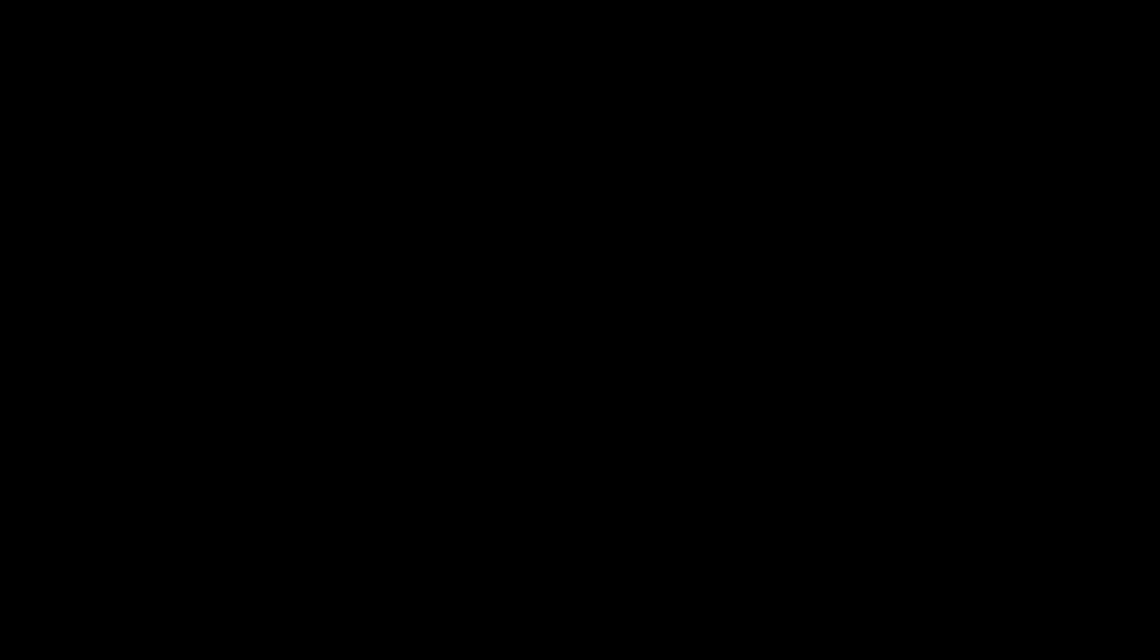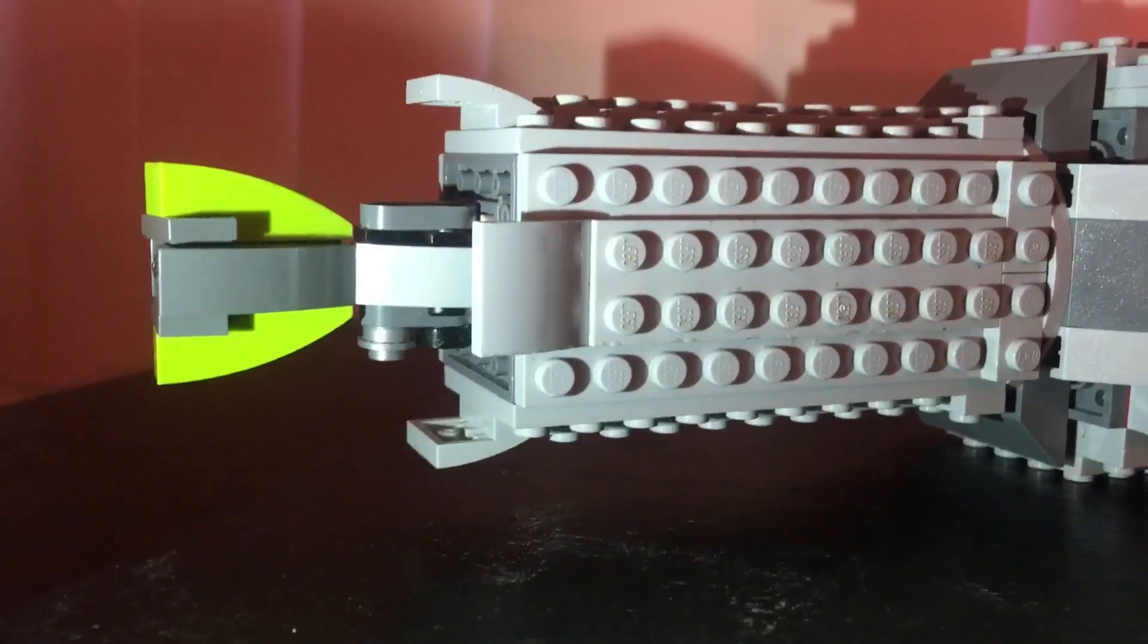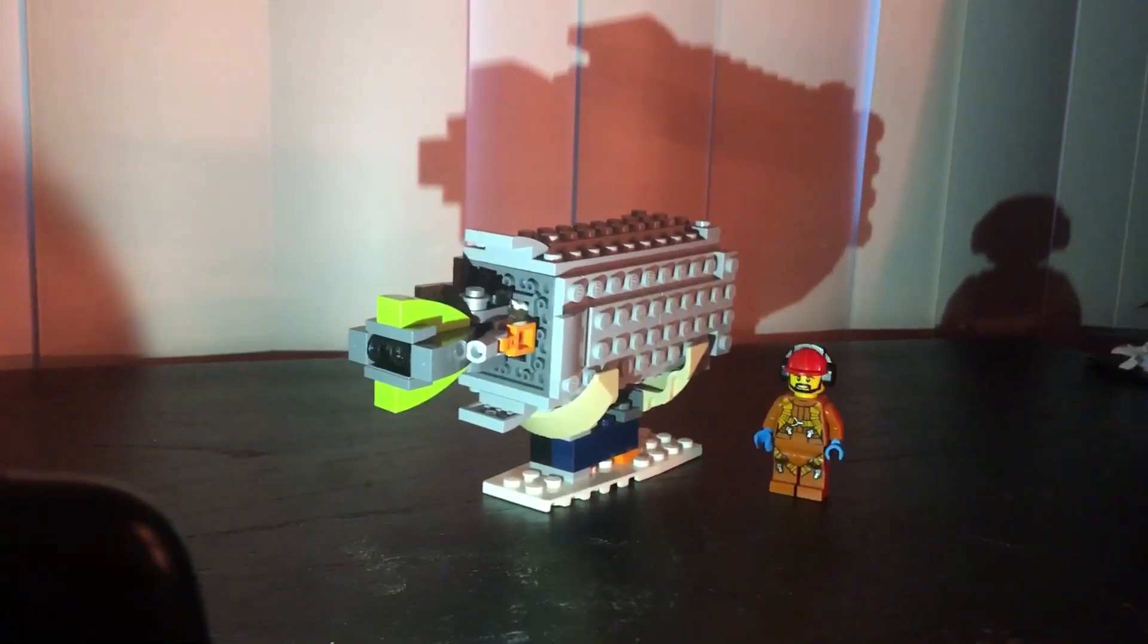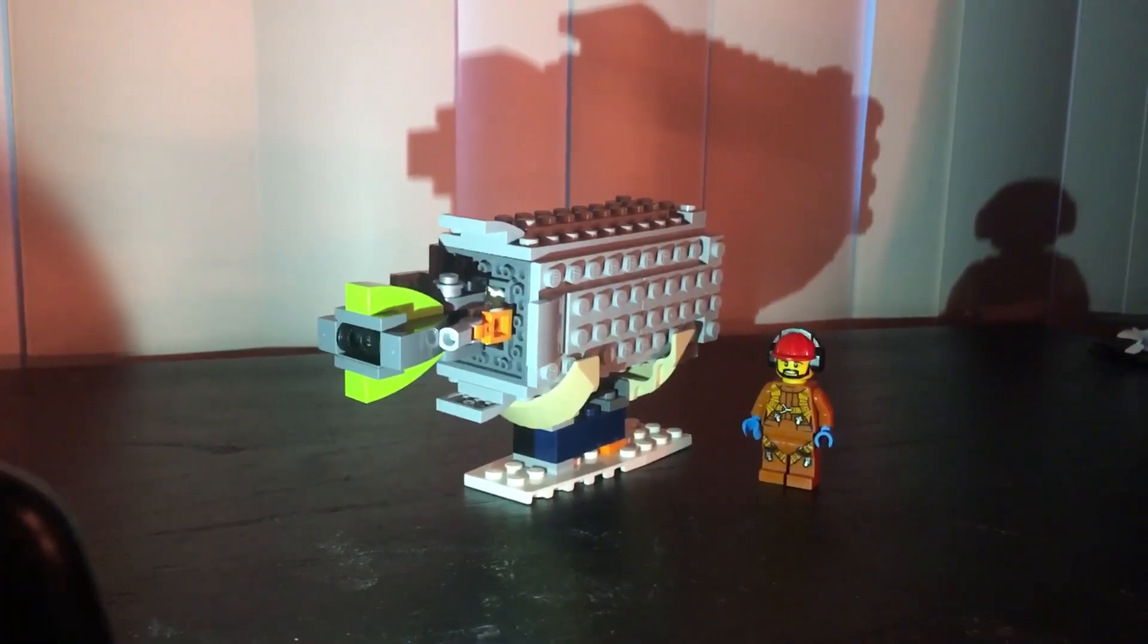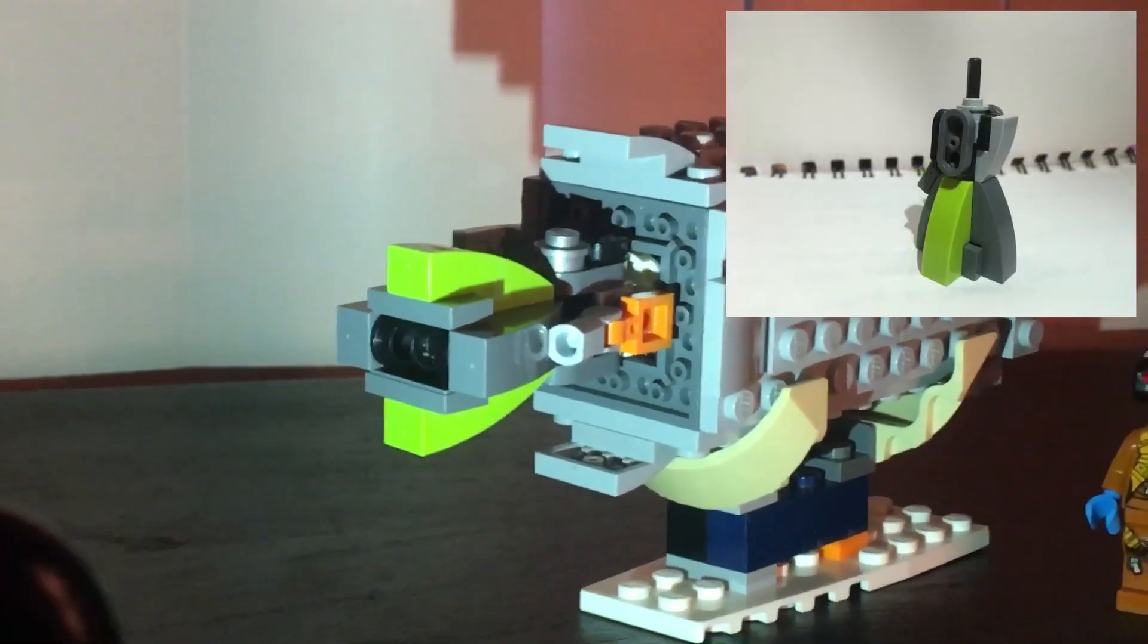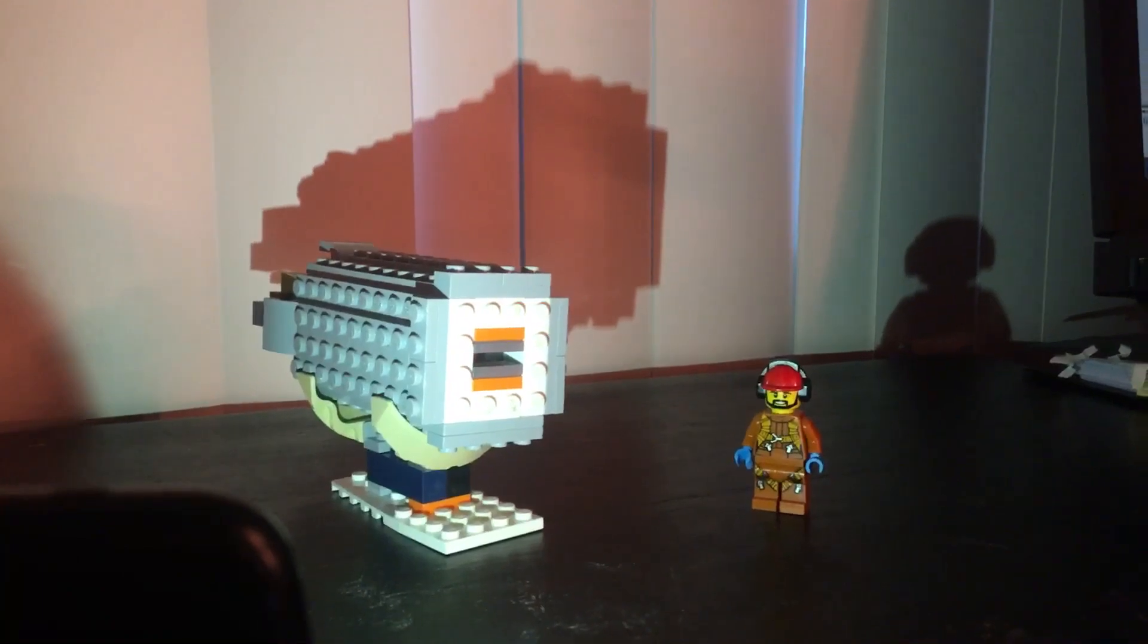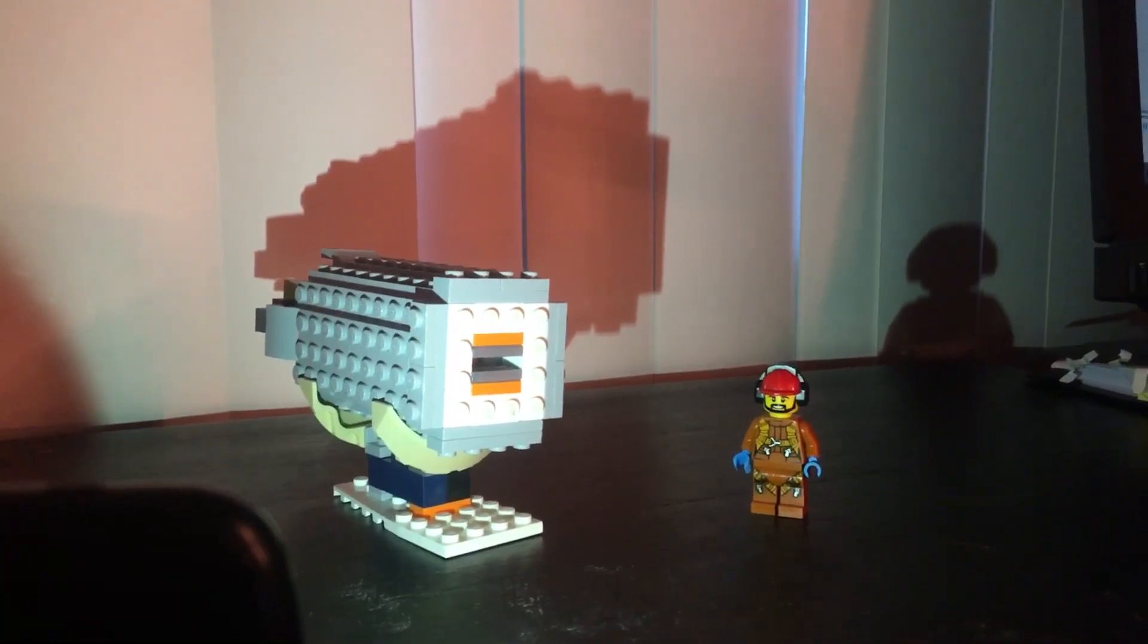Here we have the upper stage or second stage of Falcon 9. This is the part that takes the payload to orbit. The upper stage is expendable, making Falcon 9 a partially reusable launch vehicle. MVAC is a unique build, and as you can see on the images here, it actually looks pretty cool. And this is the top of the second stage where the payload would be attached to, or the payload and payload fairings would be attached to.